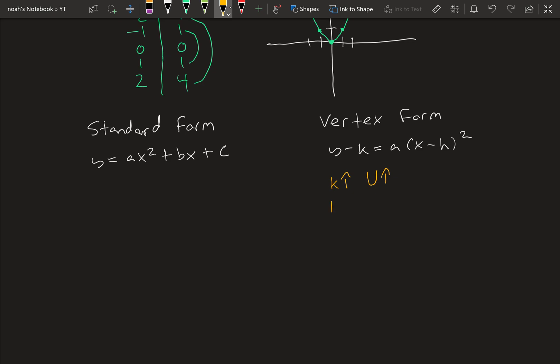And then decreasing k moves the parabola down. Increasing h moves the parabola to the right. Decreasing h moves it to the left.